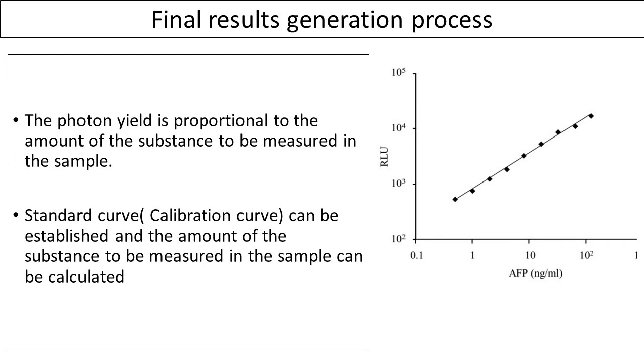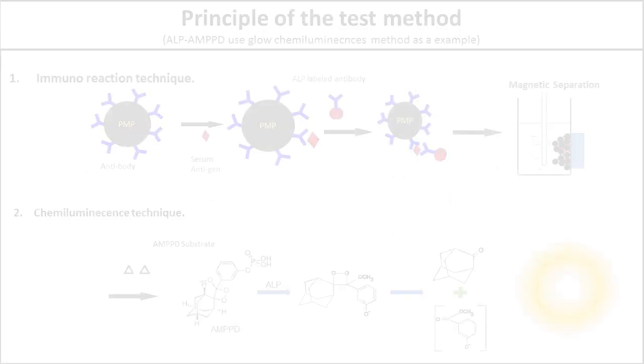A standard curve can be established, and using that curve, the amount of the substance to be measured in the sample can be calculated. The photon yield is proportional to the amount of the substance to be measured.